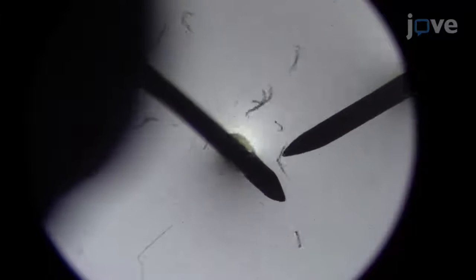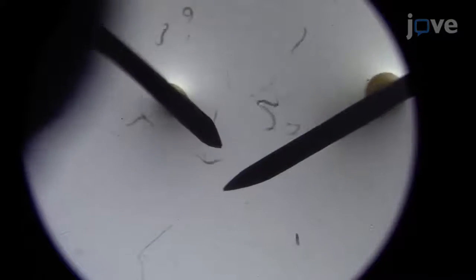Use the sharpened tips of 18-gauge hypodermic needles to slice each animal transversely at the mid-body to release 1-4 cell embryos.